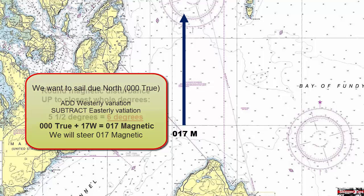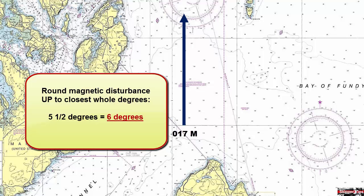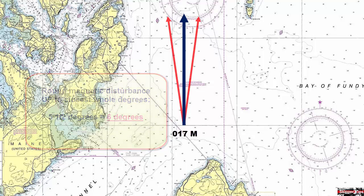Let's round our magnetic disturbance of five and a half degrees up to the closest whole degree. In this case we will use six degrees.